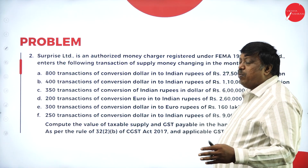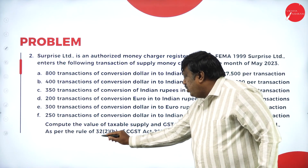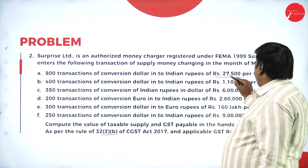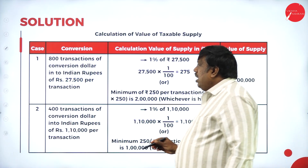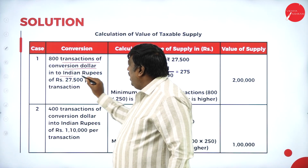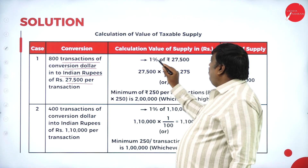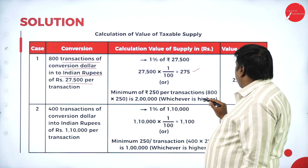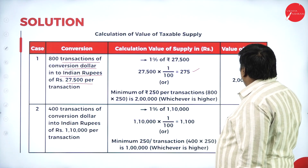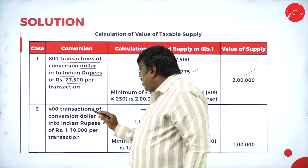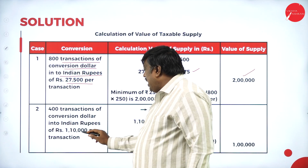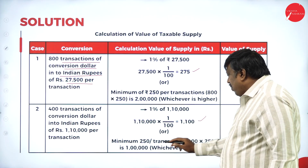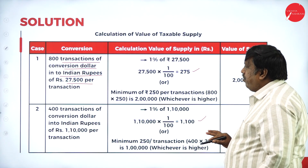Now Rule 32 sub-clause B is applicable with 18 percent GST. Case 1: 800 transactions of conversion of dollars into Indian rupees at ₹27,500 per transaction. 1% of ₹27,500 = ₹275 or minimum ₹250 per transaction — whichever is higher = ₹275. Case 2: 400 transactions at ₹1,10,000 per transaction. 1% of ₹1,10,000 = ₹1,100 or minimum ₹1,000 — whichever is higher = ₹1,100 per transaction.